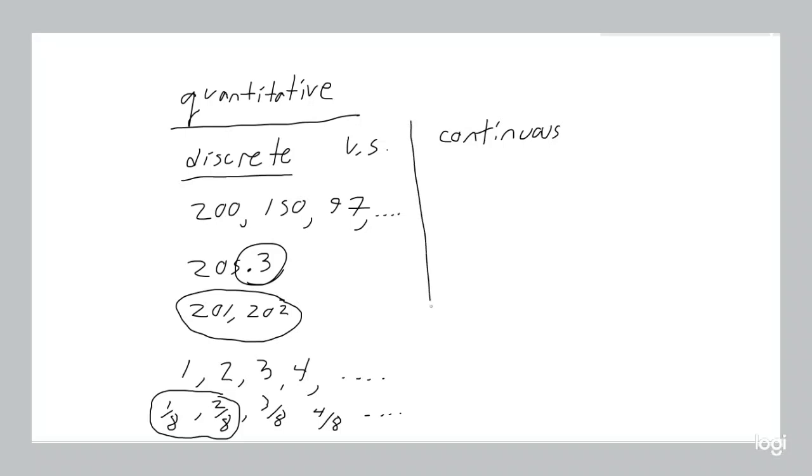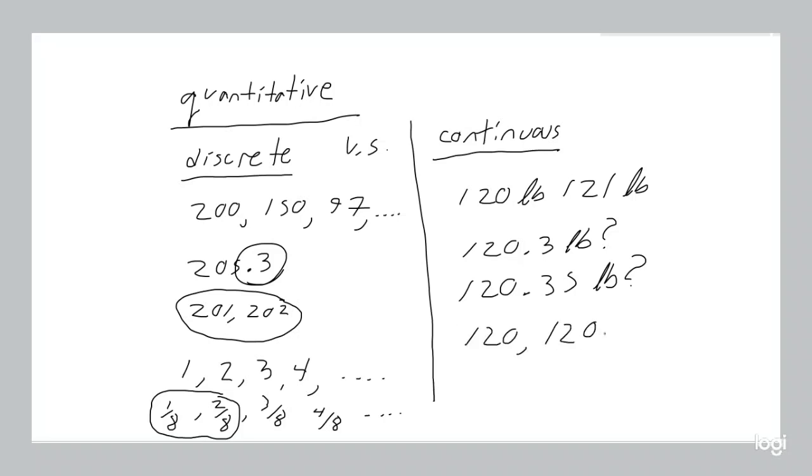Continuous data is where you're allowing any number within a range. For example, how much does someone weigh? Let's say they weigh 120 pounds, or maybe they weigh 121 pounds. Now, are they allowed to weigh 120.3 pounds? Yes they are. How about 120.35 pounds? Yes they are. Is there any value between 120 and 121 that they're not allowed to weigh? No, there is no such number. Any number within a range - wherever that range is, probably not 120 to 121, a bigger range than that - but any number within the range is allowed. That's called continuous data, related to the word continue.